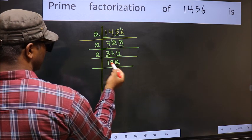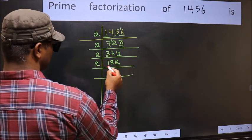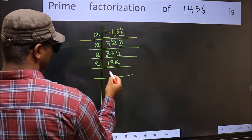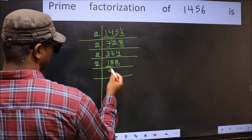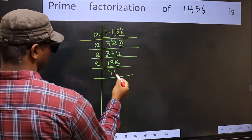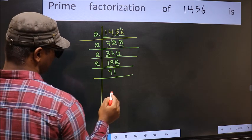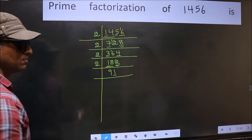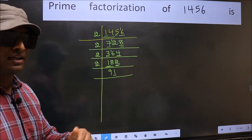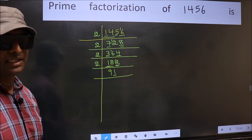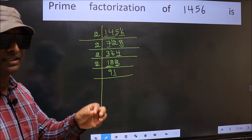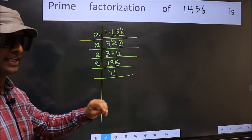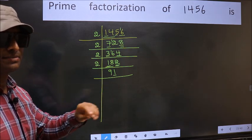Now last digit is 2. So take 2. First number is 8. When do we get 18 in the 2 table? 2 nines are 18. The other number is 2. When do we get 2 in the 2 table? 2 ones are 2. Now last digit is 1, not even. So not divisible by 2. Next prime number is 3. To check divisibility by 3, we should add the digits: 9 plus 1 is 10.